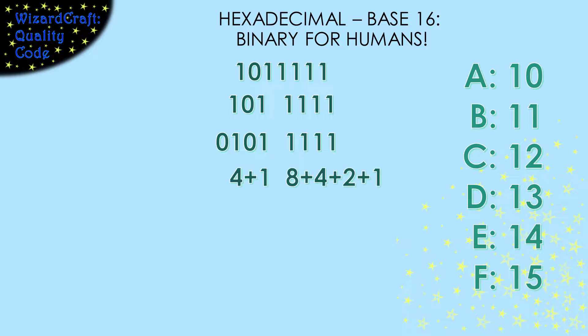So 0, 1, 0, 1 has 1s in the positions for 1 and 4, so its value is 5. 1, 1, 1, 1 represents 8 plus 4 plus 2 plus 1, which is 15. We write that with an f. So 1, 0, 1, 1, 1, 1, 1 in binary is the same value as 5f in hexadecimal. And like always, we can convert from hexadecimal back to decimal using the definition of hexadecimal: 5 times 16 to the first power plus f, 15 times 16 to the zeroth power, is 95.